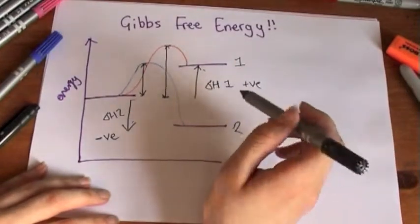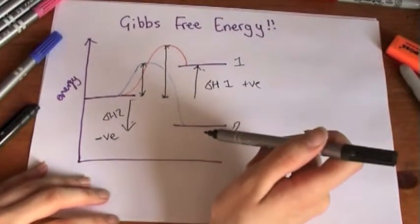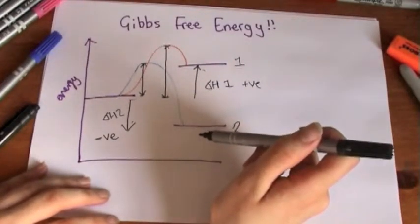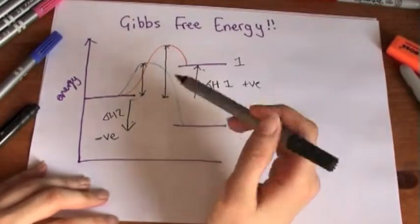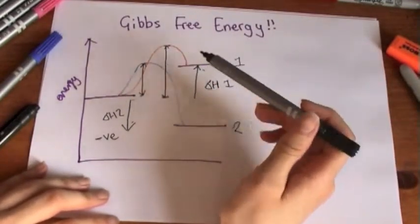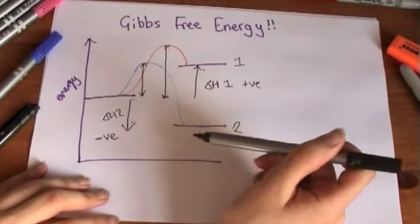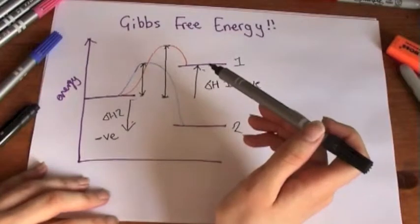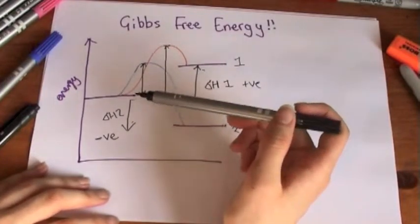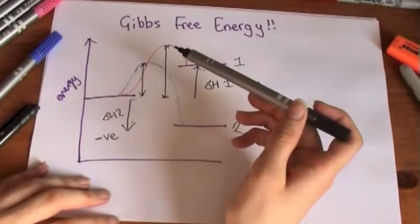In your head you can kind of rationalize how an exothermic reaction happens, because as everything in life tends to be, things want to be in the lowest energy state as possible. So you go, okay, well when a system is losing its energy to the surroundings, it's releasing the heat, it's becoming more stable as it goes lower in energy.